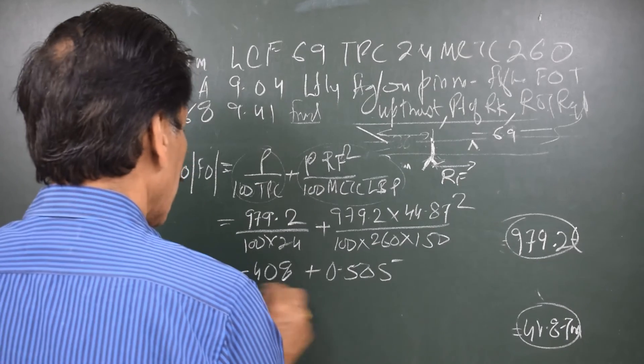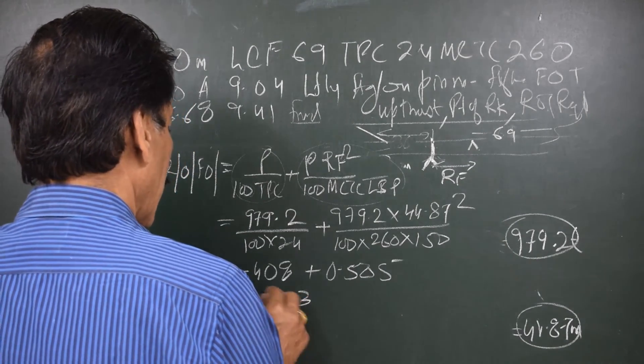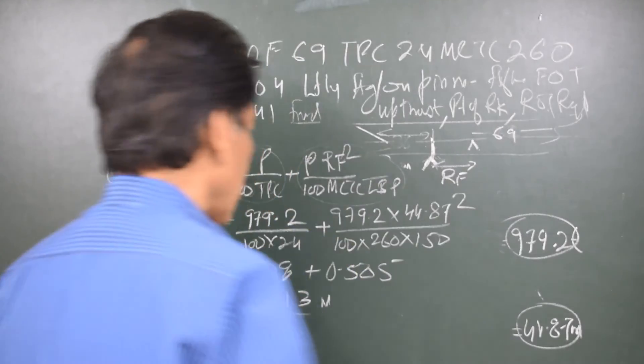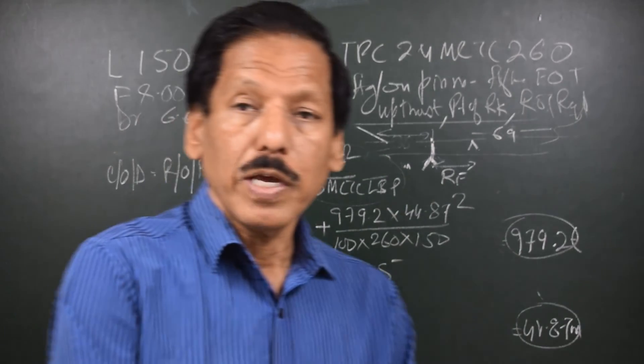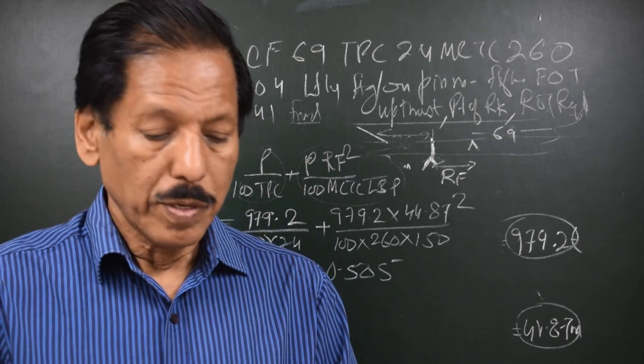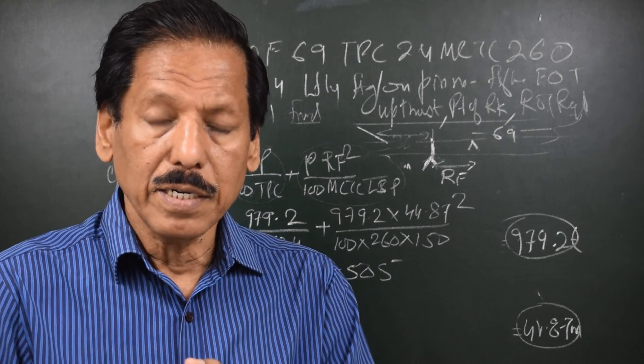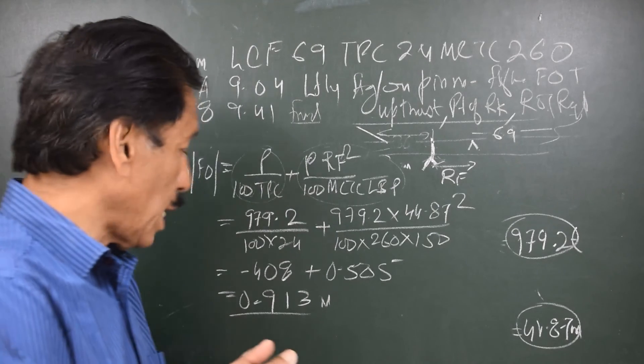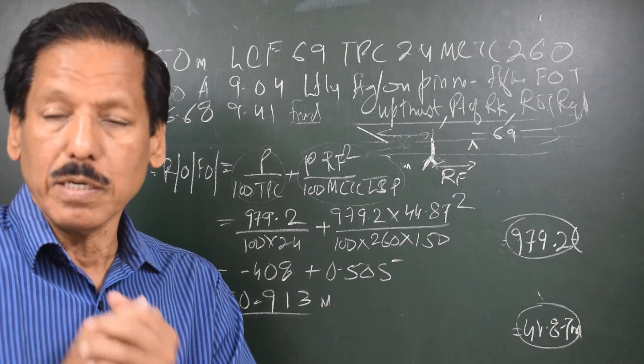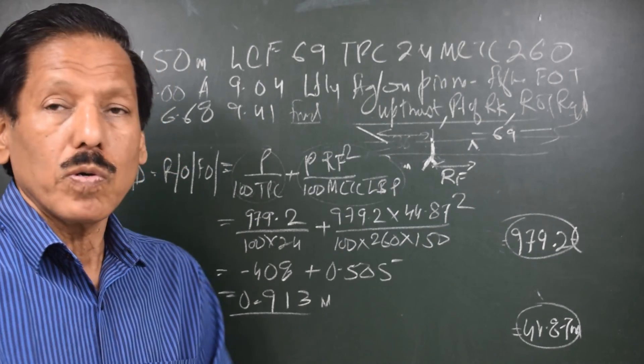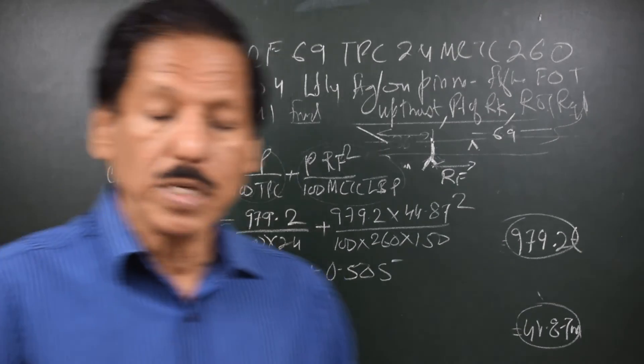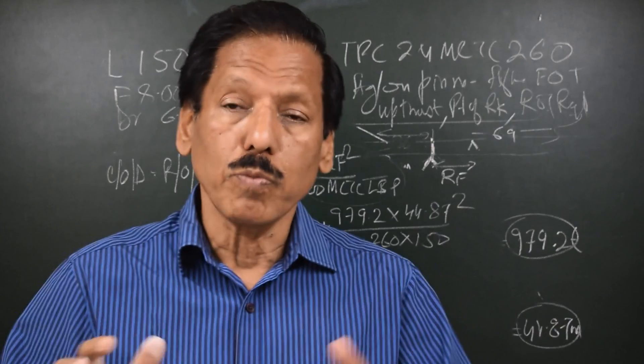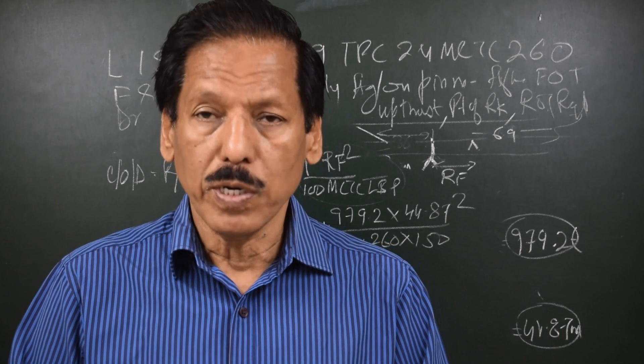So the total is 0.913 meters, that is 91.3 centimeters. So if we look at the tides and find that after so many hours there's going to be tidal rise equal to 91.3 centimeters, this will refloat the vessel. Necessary preparations can be done, because we must always remember that the tidal force is the most powerful tool we have for refloating the vessel.